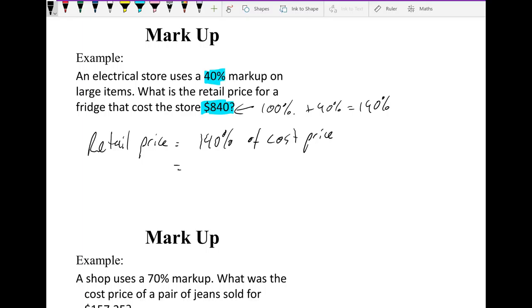Here we go. Retail price equals 140% of cost price. Now we just change it into math. So it's going to be 1.4, turning that percentage into a decimal, and 'of' means times. Cost price was $840. And that is $1,176. Therefore the fridge costs $1,176.